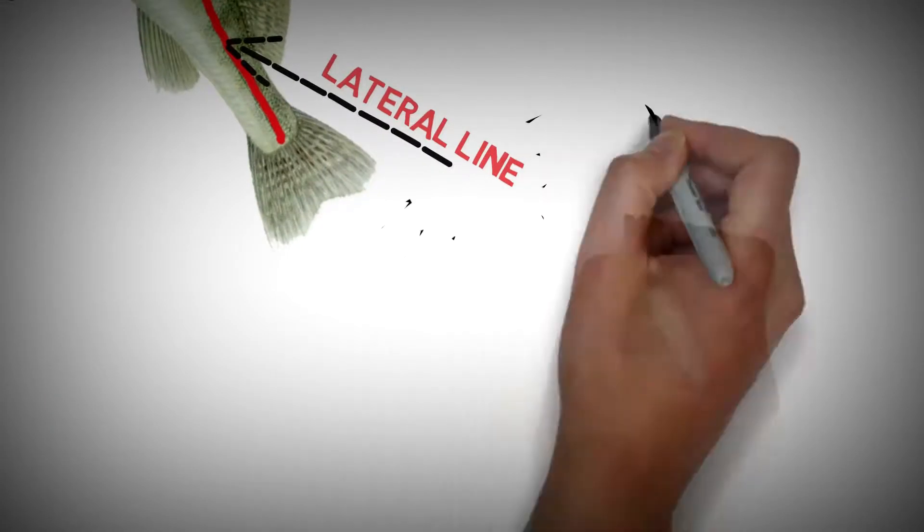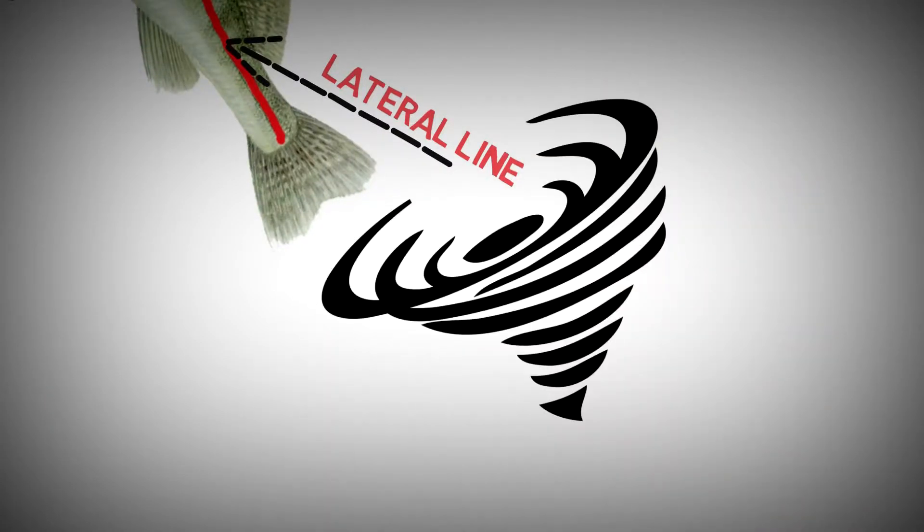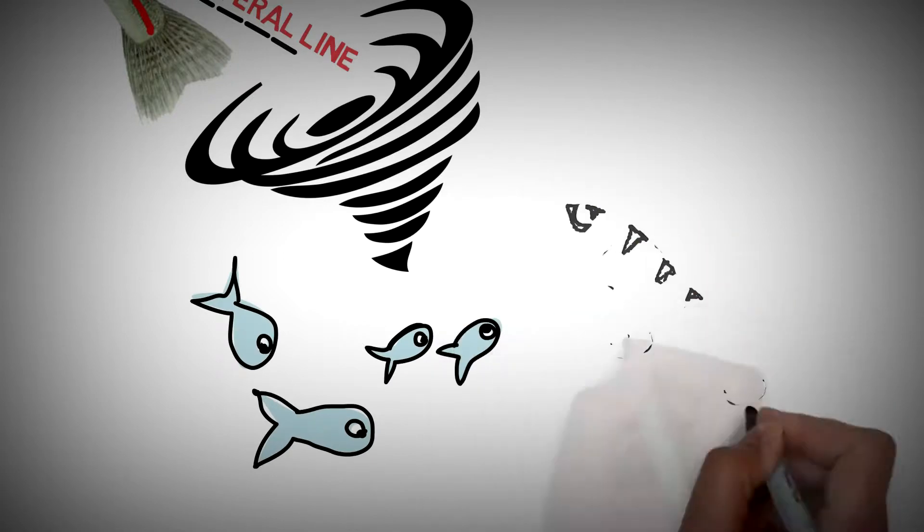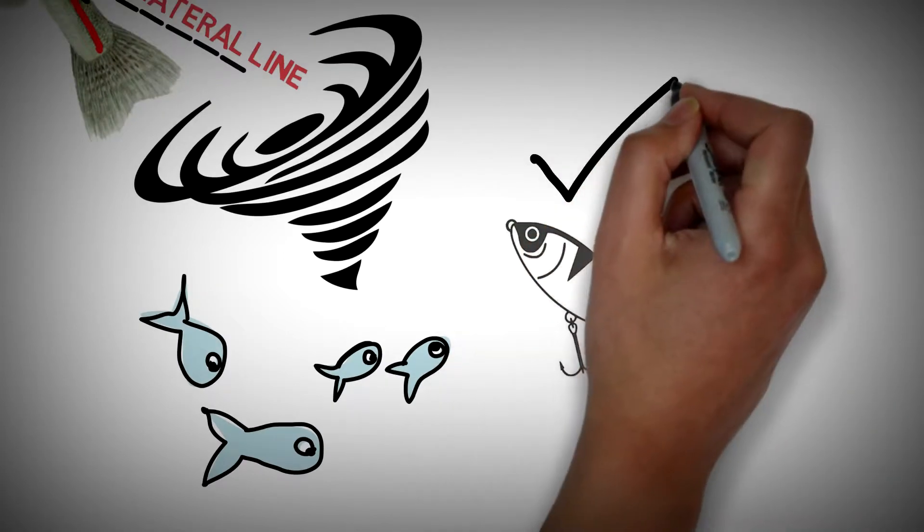This is how they feel the vortices produced by fleeing prey, and this is why spinning can be so fruitful.